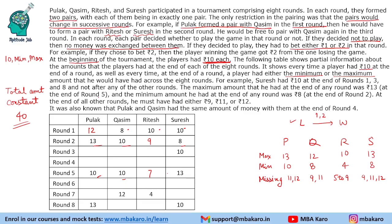One more statement given at the end: Pulak and Kasim had the same amount at the end of round 4. The only common missing value for both Pulak and Kasim is 11 rupees. So this value is 11 for both of them in round 4.